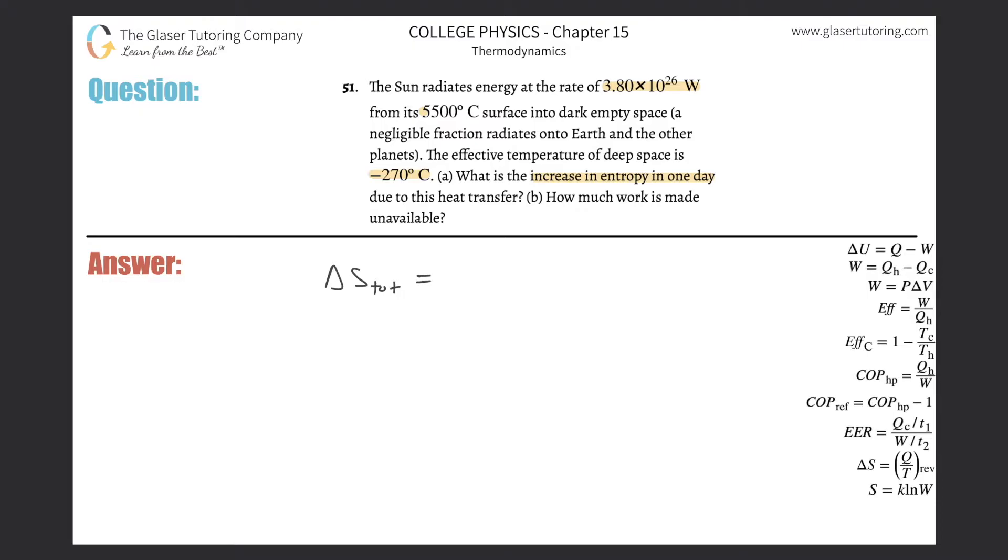So essentially, the change in entropy, the total change for this system will be equal to the change in entropy of the cooler object minus the change in entropy of the hotter object. Why is it minus the hotter object? Because the hot object loses heat energy. If something hot is radiating heat energy to something cold, which is always the way it works, hot to cold, that means the hot thing is losing energy and the cold thing is gaining energy.